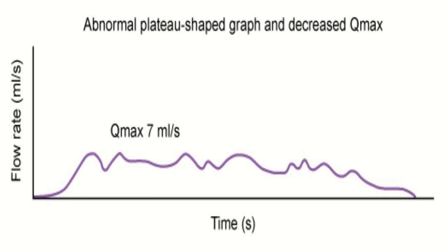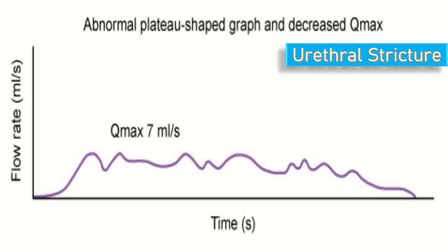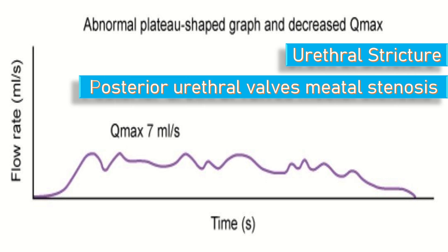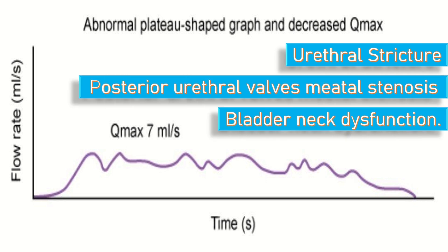Here we have an abnormal plateau-shaped graph with decreased Qmax. Here the Qmax is 7 ml per second. The possible causes include urethral stricture, posterior urethral valves, meatal stenosis, and bladder neck dysfunction.